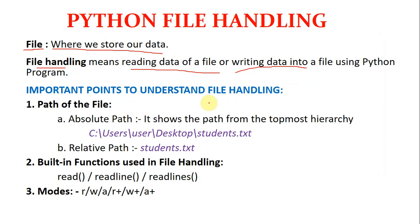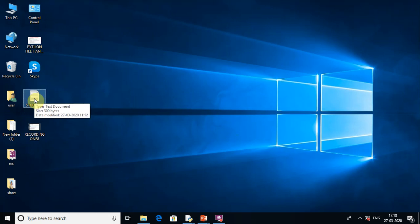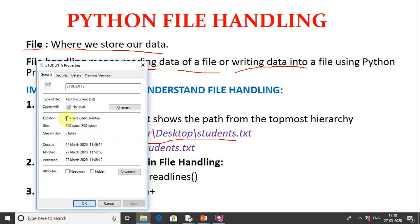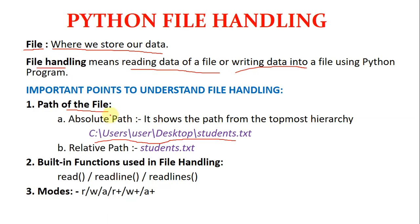Before beginning the actual programs, there are a few points you need to understand. The first thing is what is the path of the file. Path means it is a sequence — it shows where the file is stored. When you right-click on the file and go to Properties, you will find the path. This file students.txt is stored in C drive, inside Users, then User, then Desktop. The name of the file is students and the format is .txt.